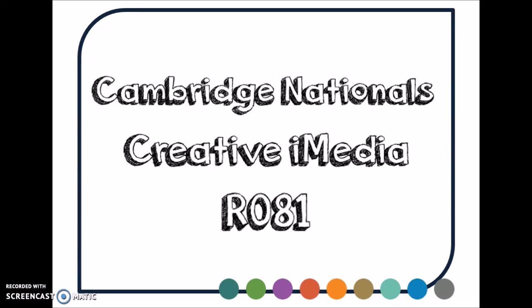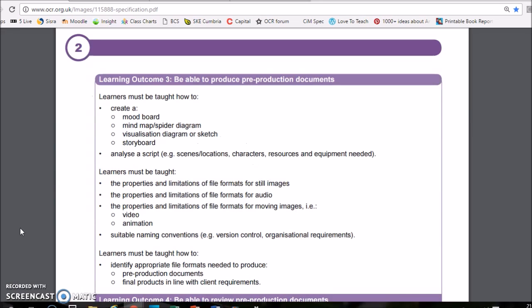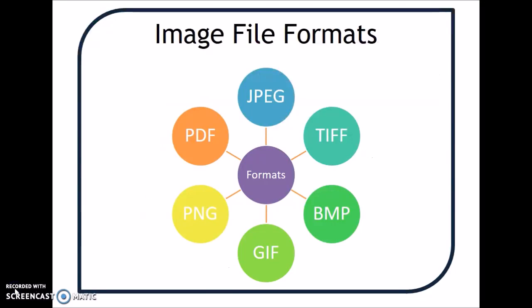As part of LO3 for R081, you need to know about image file formats, file formats for video, and file formats for audio. Looking at the specification, you can see it just says you need to know the properties and limitations of file formats for still images. Because it doesn't list them, I've taken the list of file formats from R082, which is the digital graphics unit — a core unit everyone should study. So the file formats listed here from R082 are six that you need to know about.